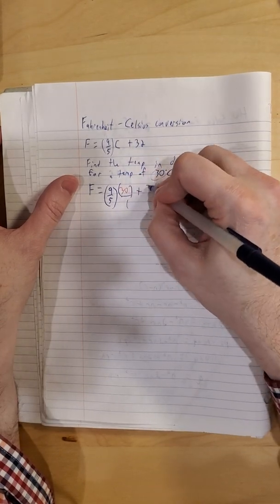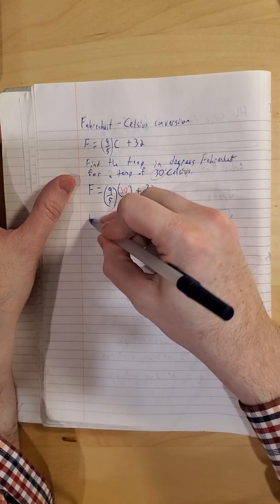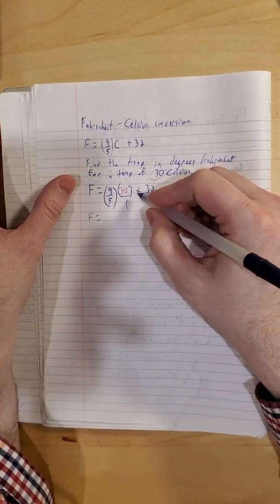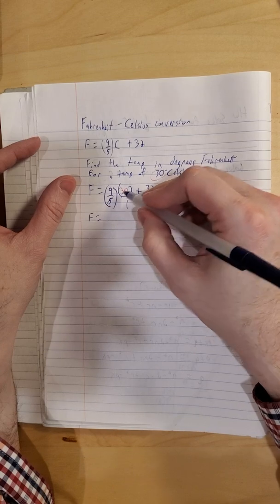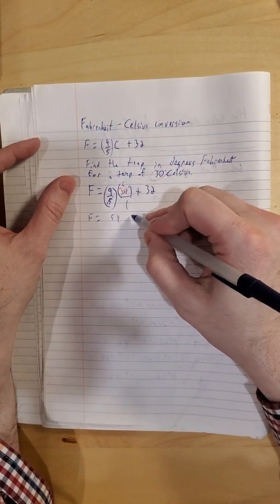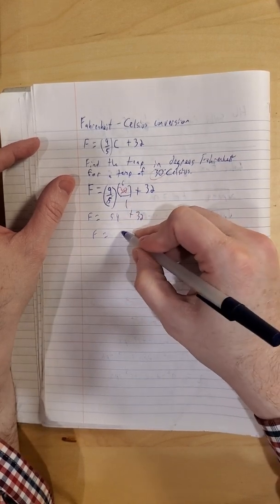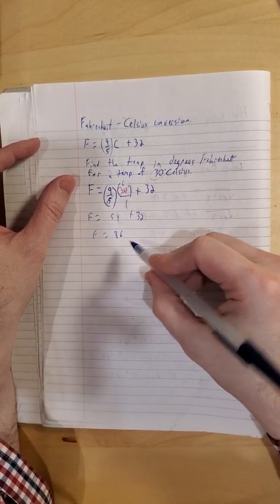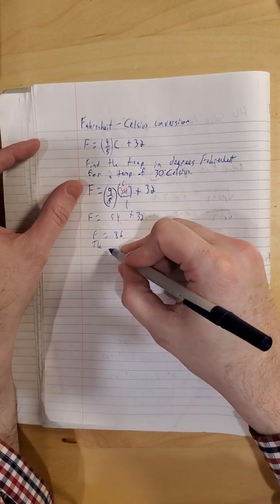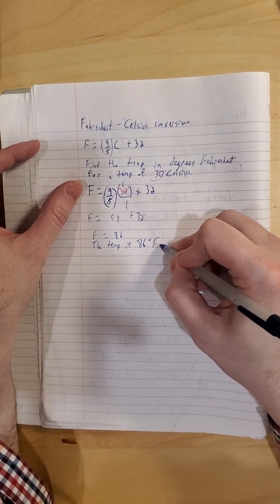If it helps, you think of it as 30 over one, and we have our plus 32. Keep the whole problem together. Okay, so arithmetic time: thirty-fifths is six, so nine by six is 54. So F is 54 plus 32, so F is equal to 86. And then we just throw that into a sentence. So the temp is 86 degrees Fahrenheit.